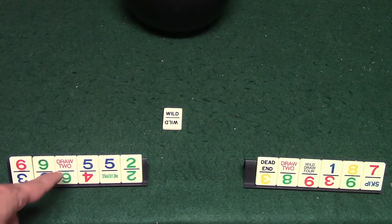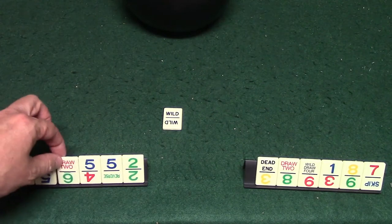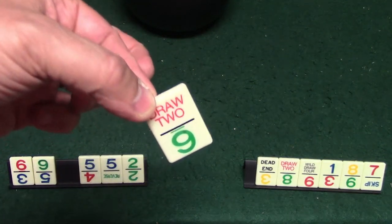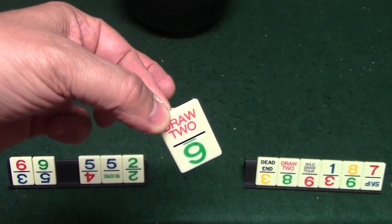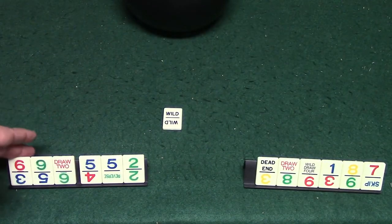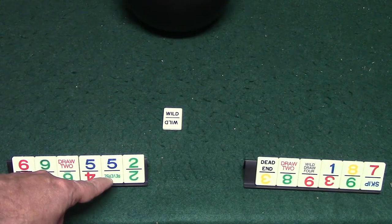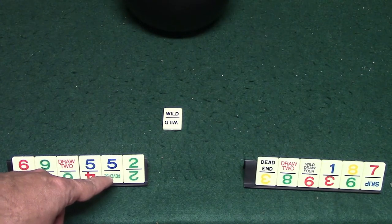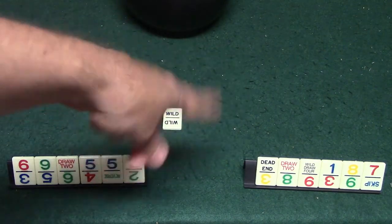Some of the dominoes will have words on them. Here's one that says draw two, and if you play this your opponent who is next is going to have to draw two tiles and he'll lose his turn. Reverse is going to reverse the direction of the play, so if it's going this way it will then go this way.